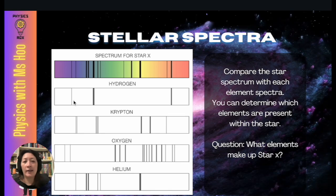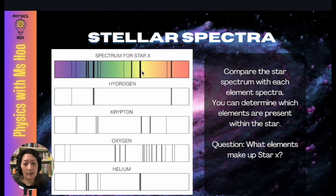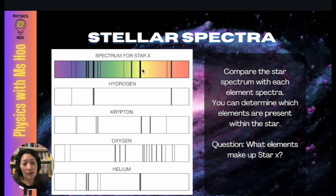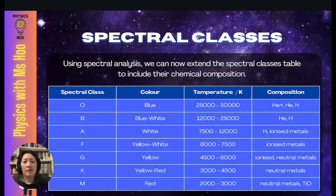Based on the diagram, the spectrum for star X is not identical to any single element, but some lines match up with various elements, meaning star X is a combination of different elements. Looking at hydrogen — which has three black bands — all three exist in the spectrum for star X, so hydrogen is present. Krypton's lines do not all match up, so krypton is not part of star X. Helium's black bands all match up with star X. So hydrogen and helium are among the elements that make up star X. Using this spectral analysis, we can extend the spectral classes table to include chemical composition.